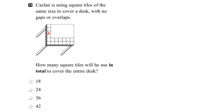We can count these tiles, but what about the area that hasn't been covered yet? What we can do is extend these rows — draw in a line there, there, and there — and then do the same thing with the columns, putting a line here, here, and so on. Now we have a picture of what the desktop would look like when it's fully covered.